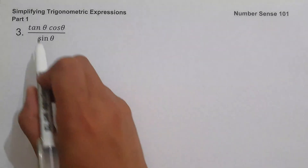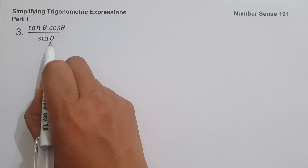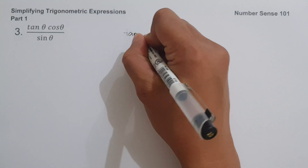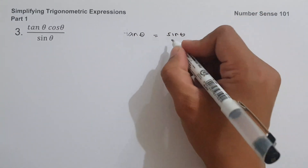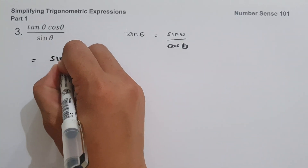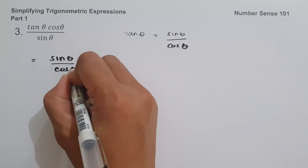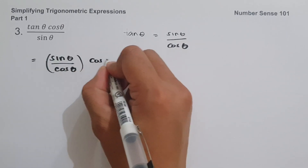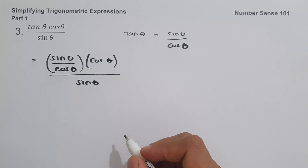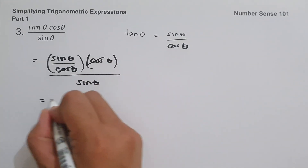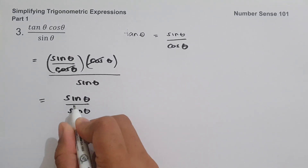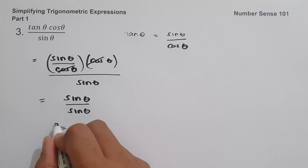On example number three, we have tan θ · cos θ / sin θ. Remember that tan θ = sin θ/cos θ. So we rewrite tan θ as sin θ/cos θ, then multiply by cos θ, with sin θ in the denominator. The cos θ terms cancel, leaving sin θ/sin θ, which equals 1. That is our answer.